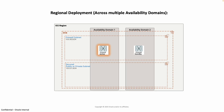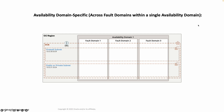The standby firewall is ready to take over if the active firewall fails, ensuring continuous service without interruption. This setup is the recommended and default option for critical applications. It provides continuous protection even if one or more Availability Domains fail, ensuring redundancy and resilience against Availability Domain level outages.